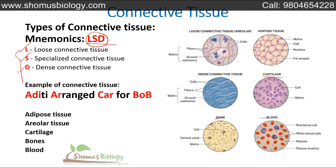Examples of connective tissue include cartilage, blood, bone, and adipose. To remember these in sequence, use the sentence: 'Aditi arranged car for Bob.' AD for adipose tissue, AR for areolar tissue, CR for cartilage, BO for bone, and the last B for blood. So the examples are adipose tissue, areolar tissue, cartilage, bone, and blood.